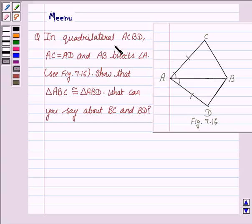It says in quadrilateral ACBD, AC is equal to AD and AB bisects angle A. Show that triangle ABC is congruent to triangle ABD.